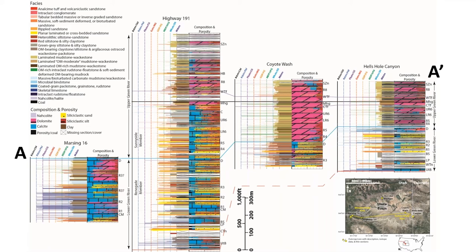Coming into the Upper Green River, the lake expanded dramatically, and we see especially in the eastern part of the basin that the strata is dominated by organic matter-rich and organic matter-lean dolomite muds. Fluvial influence continues near the delta on the east side of the basin. Organic matter is most abundant at the mahogany bed, which represents the culmination of that lake expansion. That also marks the onset of the blended sodium carbonate minerals.